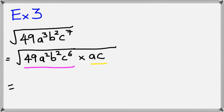If I square root 49, I'll get 7, and then if I square root a squared, I'll get a, b squared is just b, c to the power of 6 square rooted gives c cubed, and that's multiplied by the square root of ac.